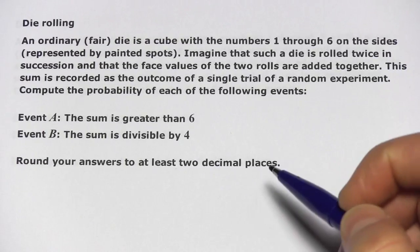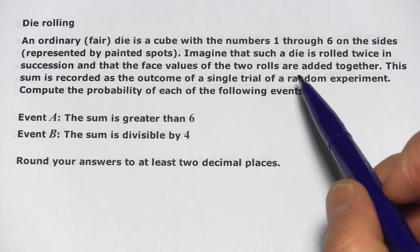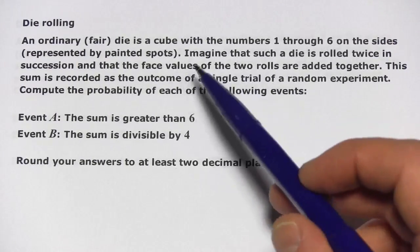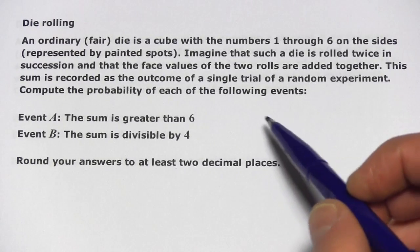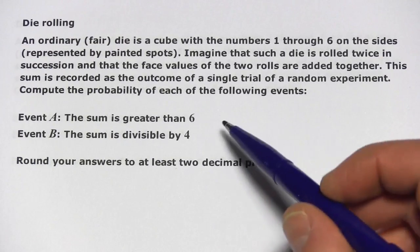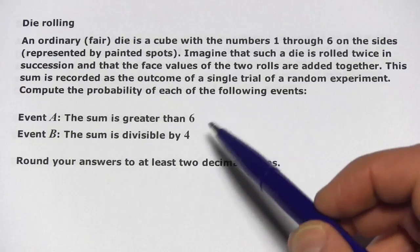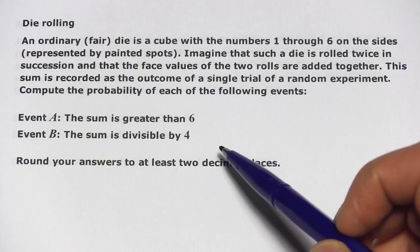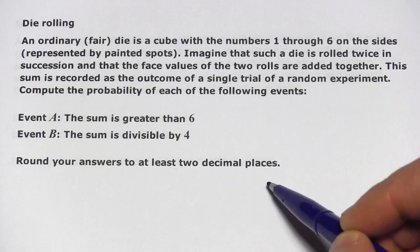In this problem, we're looking at rolling dice. It says an ordinary fair die is a cube with the numbers 1 through 6 on the sides represented by painted spots. Imagine that such a die is rolled twice in succession and the face values of the two rolls are added together. This sum is recorded as the outcome of a single trial of a random experiment. Compute the probability of these events: Event A, the sum is greater than 6; Event B, the sum is divisible by 4. Round to two decimal places.